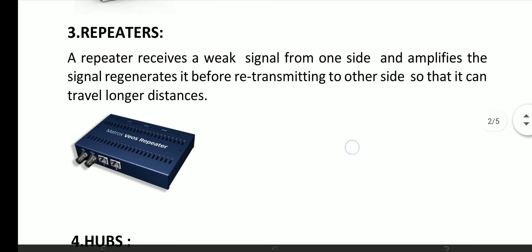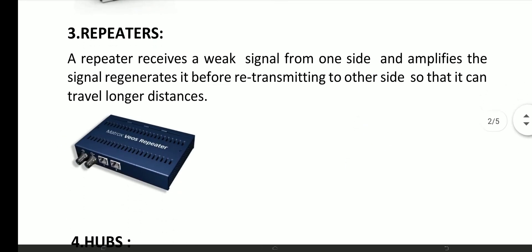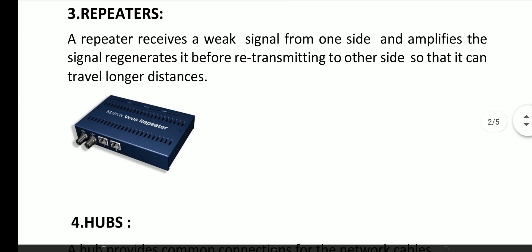A repeater receives a weak signal from one side and amplifies the signal, regenerates it before transmitting to the other side, so that it can travel longer distances.